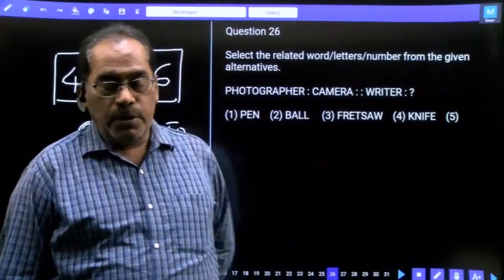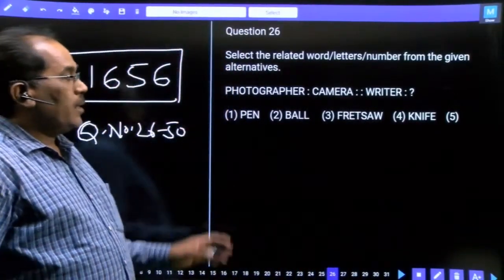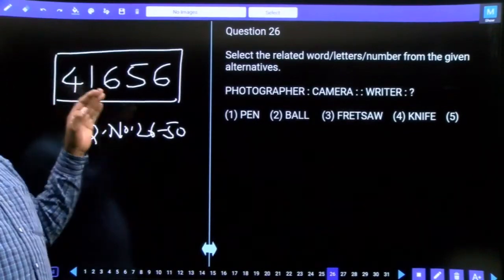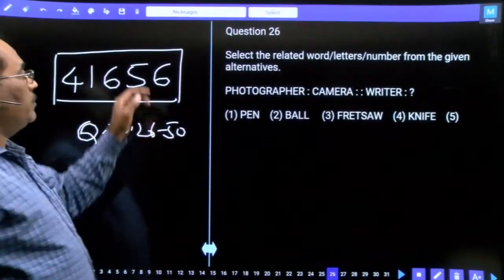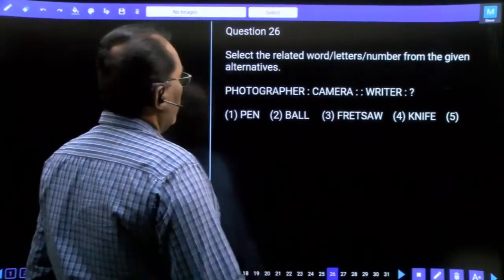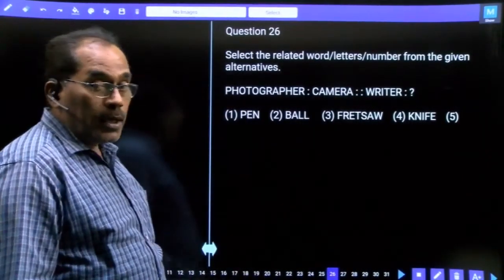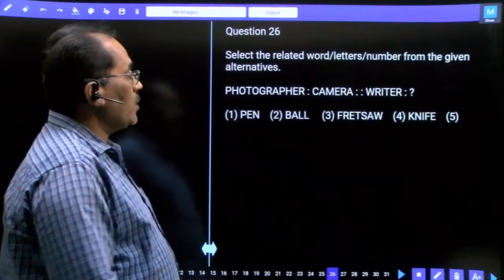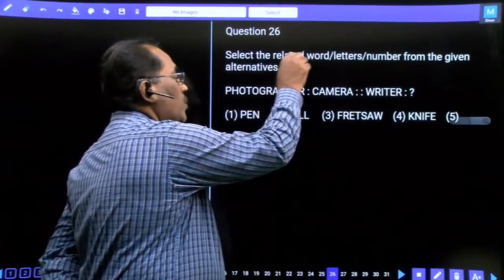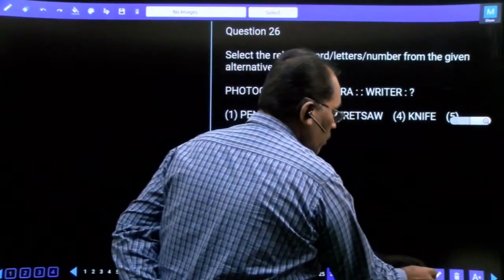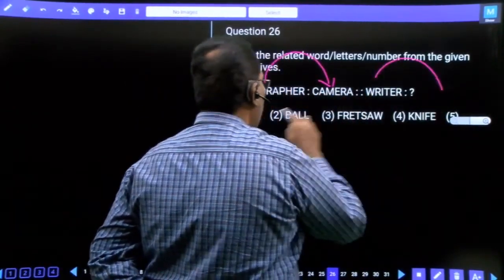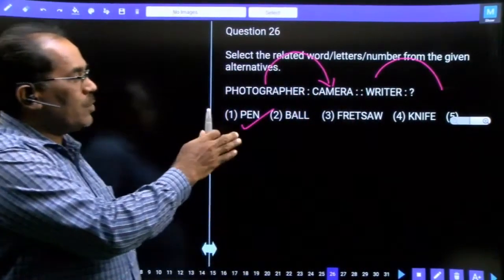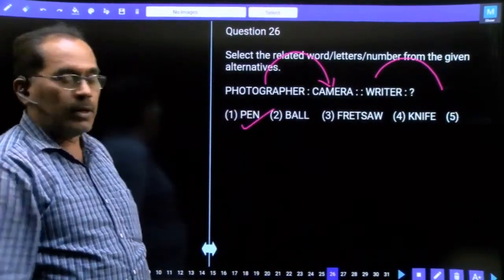Hi students, today we are going to discuss SSC CHSL Tier 1, paper number 41656, question number 2650. First question, this is an analogy based question. Photographer is to camera, photographer is to camera. The photographer is a person, camera is a tool. Writer is to pen. So photographer is to camera, writer is to pen, our answer.